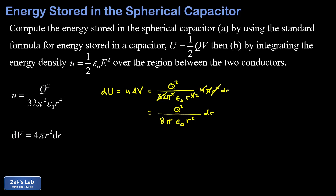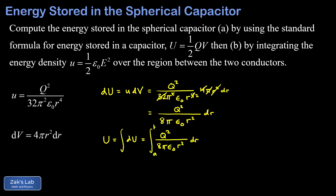Our contribution to the total energy is now written in terms of the single variable r, so we use integration to add all these contributions up. The total energy U is the integral of dU. With our expression for dU in terms of r as the integration variable, we integrate from the inner shell at r = a to the outer shell at r = b. The integrand 1/r² integrates to −1/r, evaluated from a to b, giving −1/b at the upper limit.